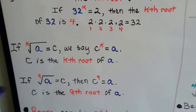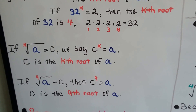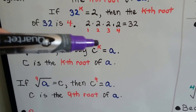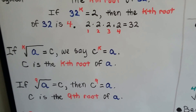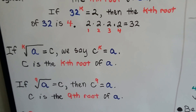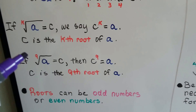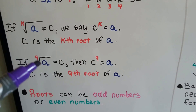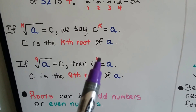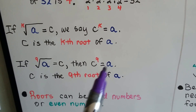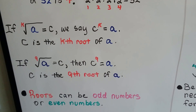If the kth root of a equals c, then we say c to the kth power is going to equal a. C is the kth root of a. Here we have the ninth root of a equals c — then c to the ninth power is equal to a. C is the ninth root of a.